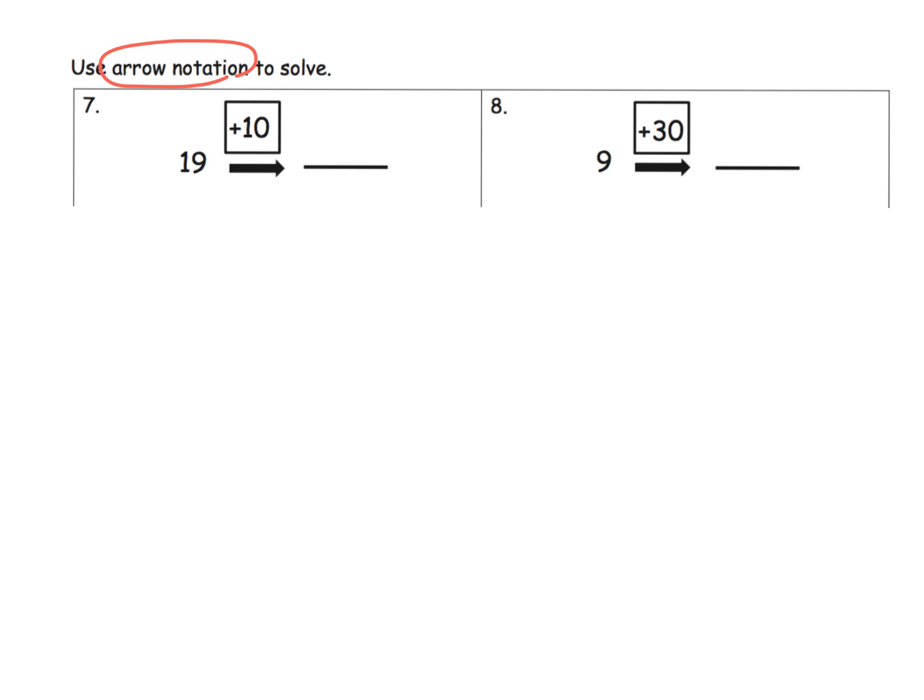So if we wanted to use the arrow notation, the idea would be it's going to look like this in a more standard form. So 19 would be modeled with a quick 10 and nine ones. So there's our nine ones, there's our quick 10. And then the 10 would be another quick 10. So using the commutative property, we can see that 19 plus 10 gives us two 10s and a nine.